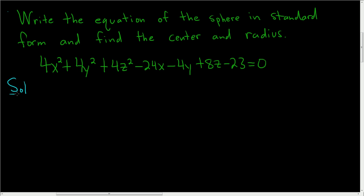We'll start by grouping together all of the x, y, and z terms. So 4x squared, and then minus 24x. Then we have 4y squared, and then minus 4y.